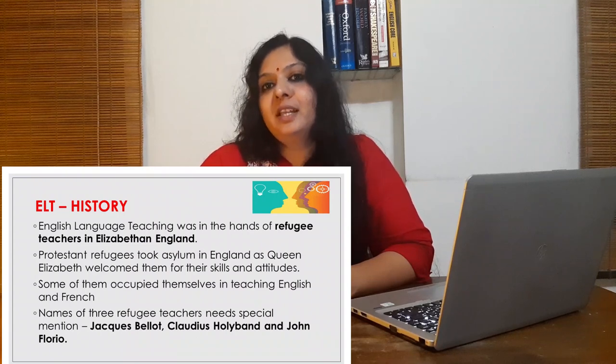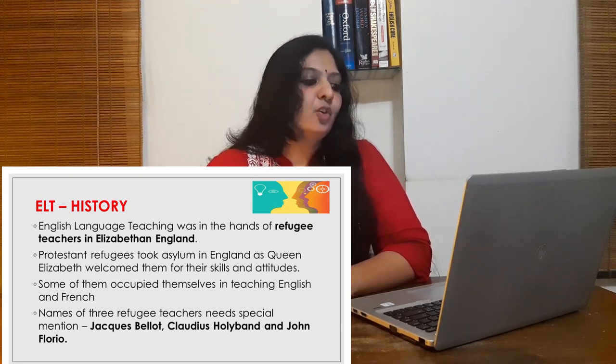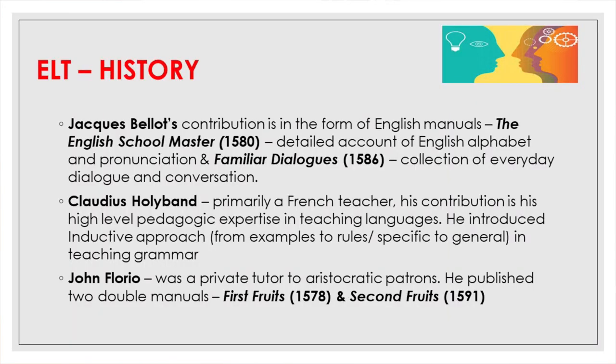English language teaching was in the hands of refugee teachers in Elizabethan England. Protestant refugees took asylum in England as Queen Elizabeth welcomed them for their skills and attitudes. Some of them occupied themselves in teaching English and French. Three refugee teachers need special mention: Jacques Bellet, Claudius Holliband, and John Florio. Jacques Bellet's contribution includes two books: The English Schoolmaster, published in 1580, and Family Dialogues, published in 1586. The English Schoolmaster gives a detailed account of English alphabet and pronunciation, while Family Dialogues is a collection of everyday dialogue and conversation.